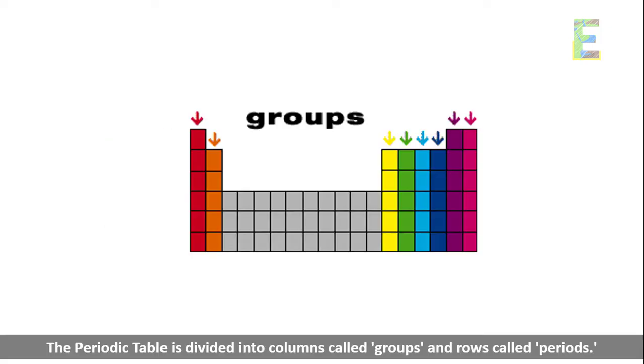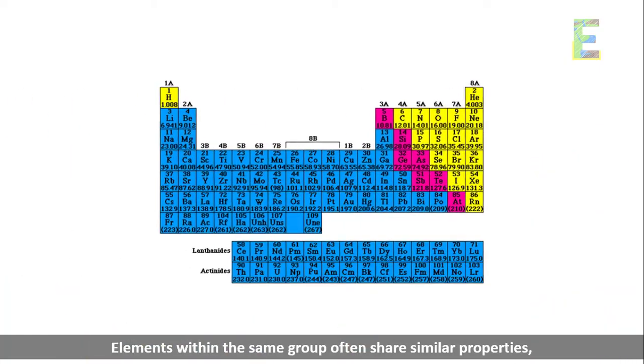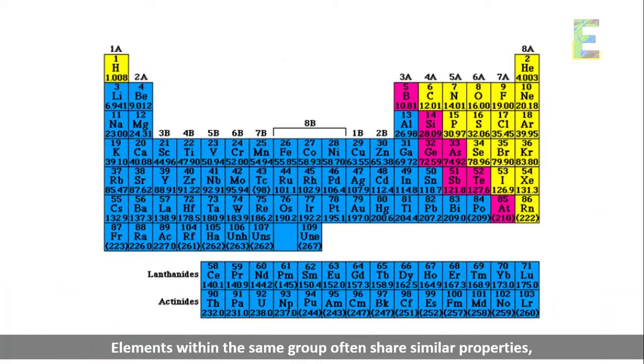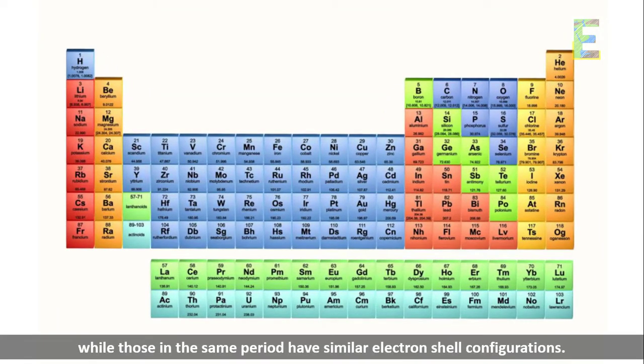Groups and periods. The periodic table is divided into columns called groups and rows called periods. Elements within the same group often share similar properties, while those in the same period have similar electron shell configurations.